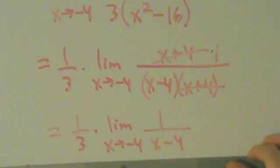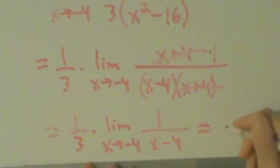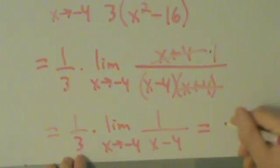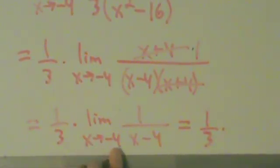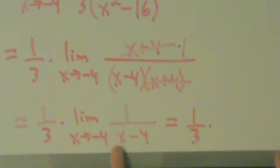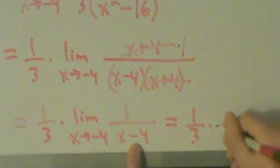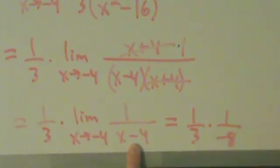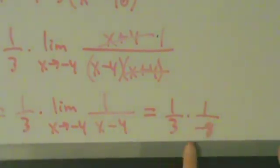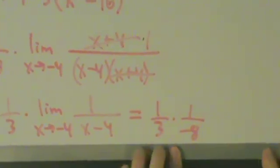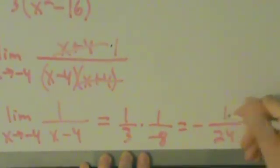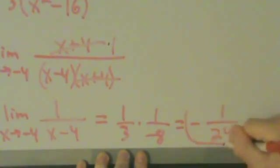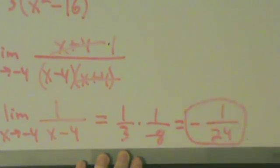Now we can do direct substitution. We still have the 1 third, and we substitute x equals negative 4 to get 1 over negative 4 minus 4, which is 1 over negative 8. So 1 third times 1 over negative 8 is 1 over negative 24, or in other words, negative 1 over 24. And that's our answer for example 2.